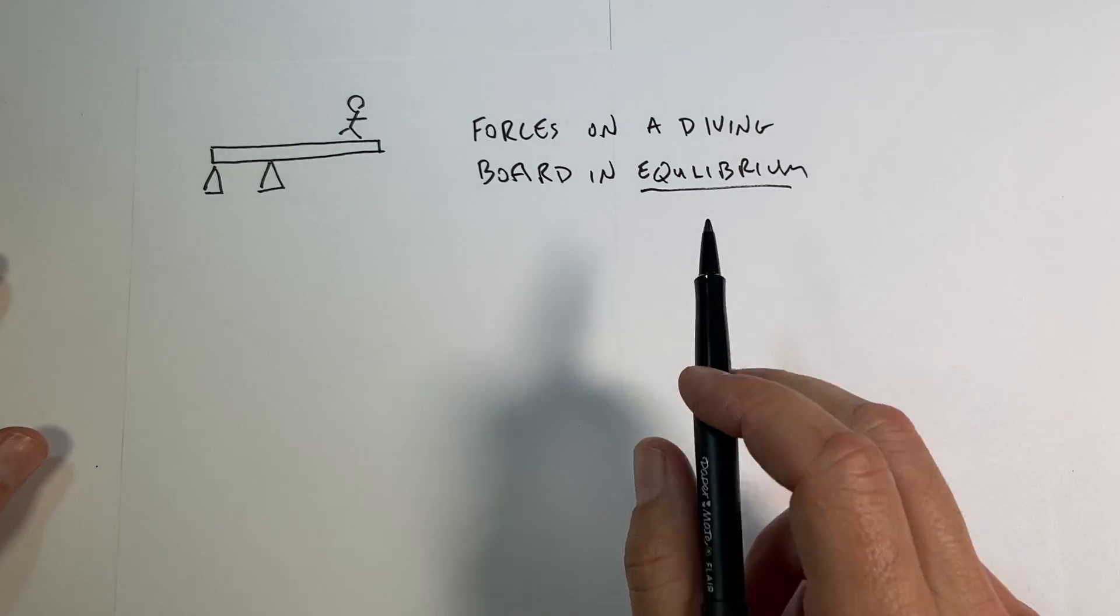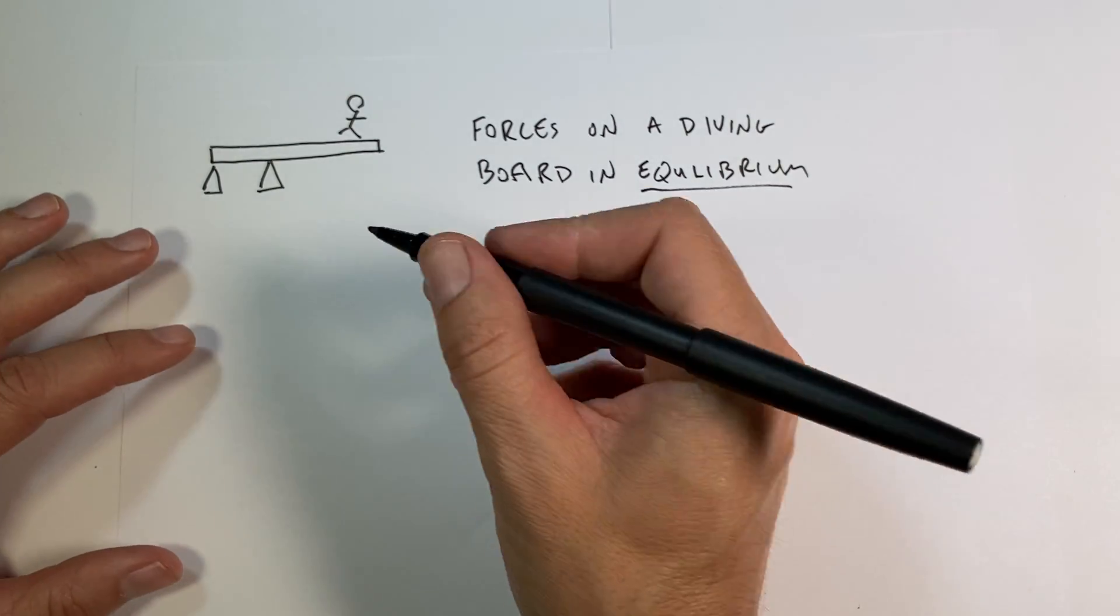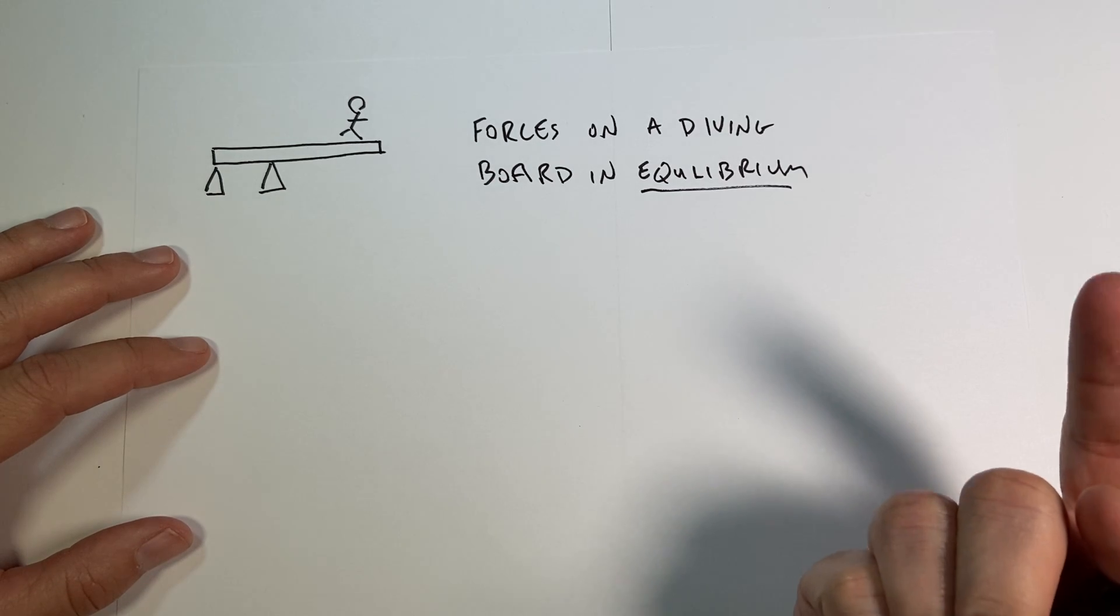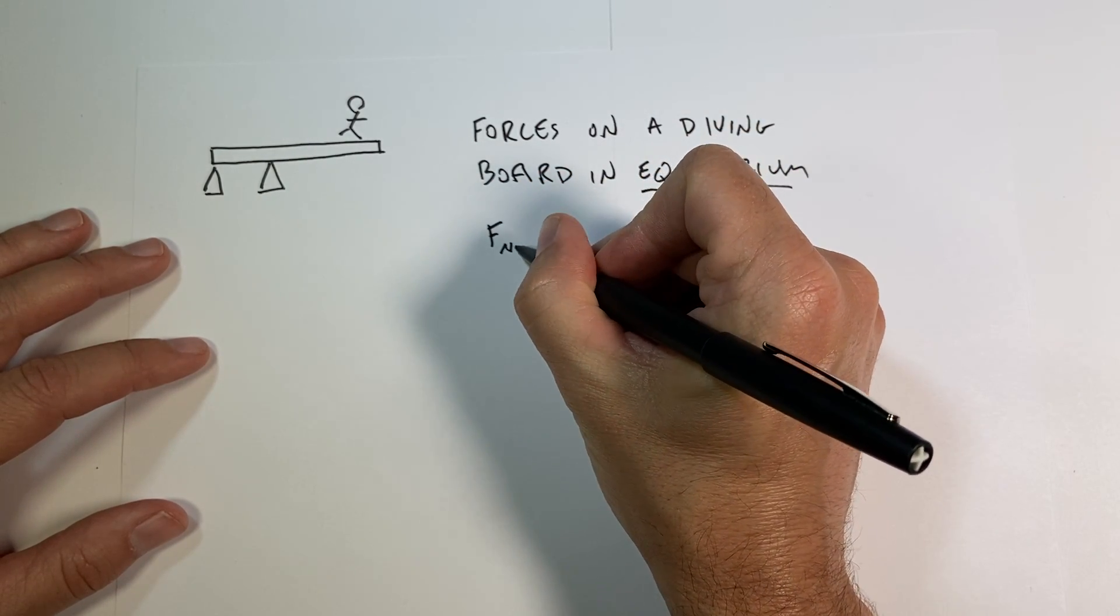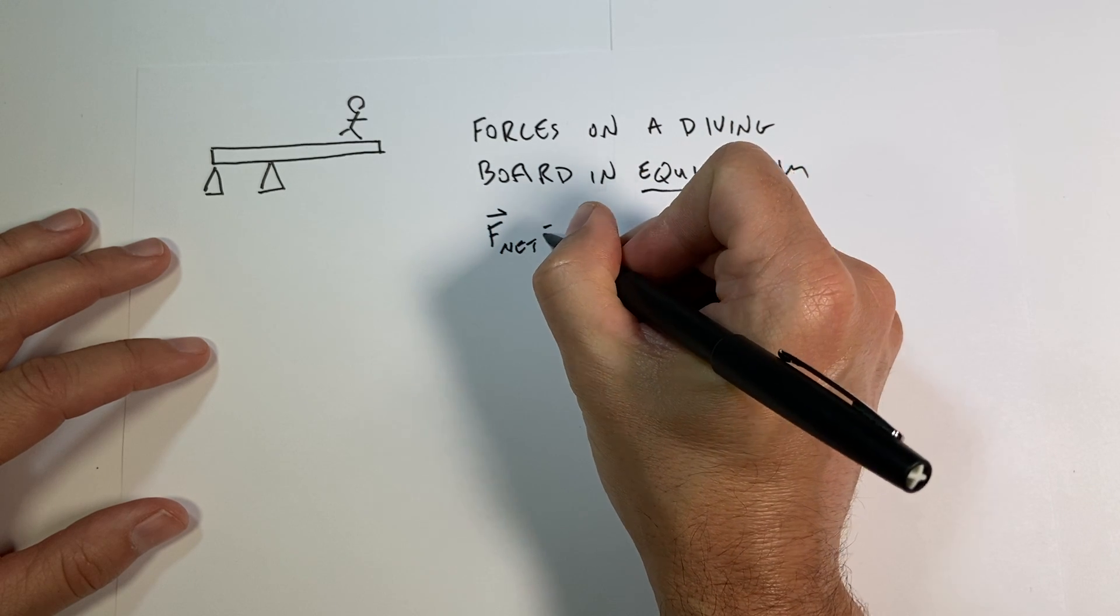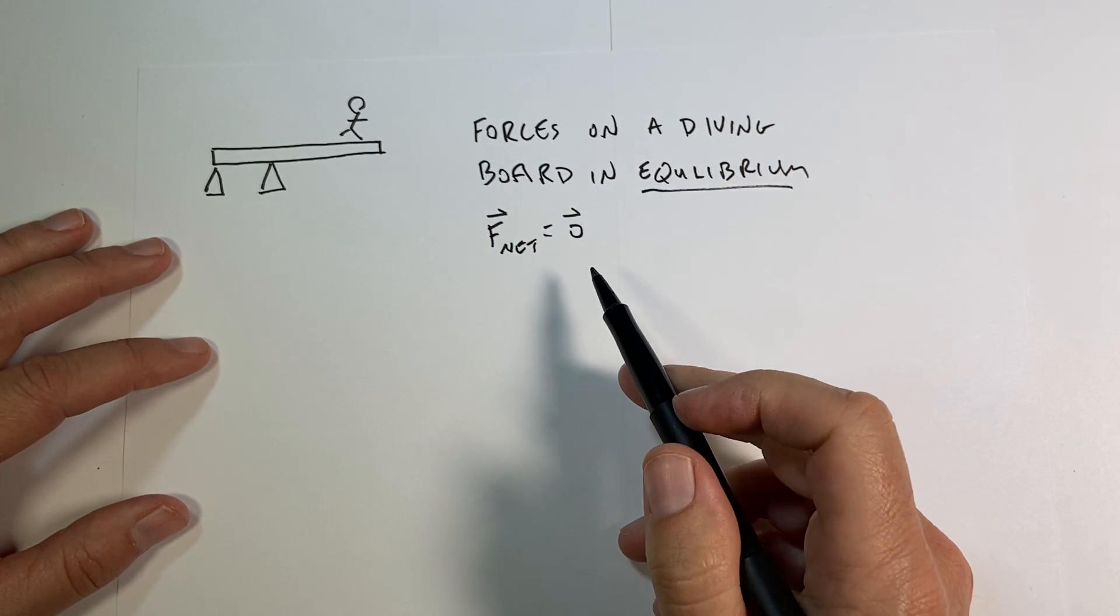So what does equilibrium mean? Before, in the case of a point object where we didn't care about the dimensions, then we had the following: F net equals zero. And yes, zero is a vector.